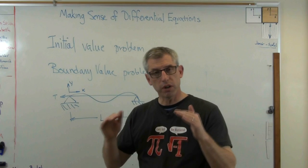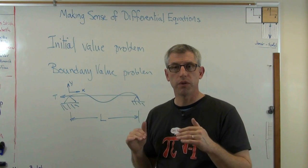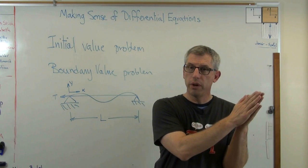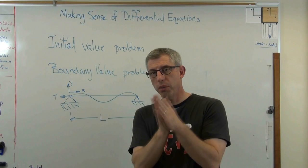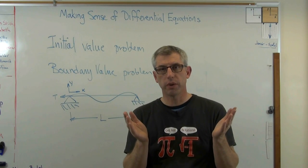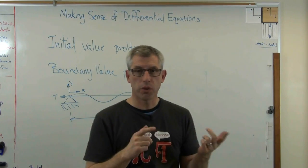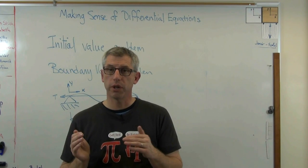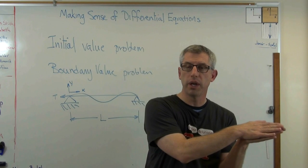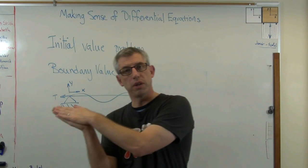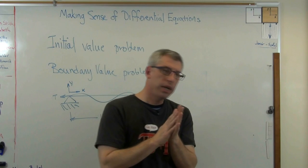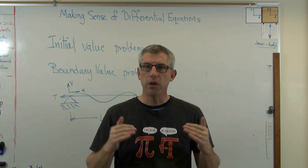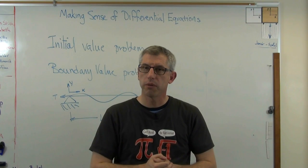We've talked about what differential equations do and the distinctions between them. Just to go over it one more time: is it an ordinary or a partial differential equation? Partial differential equations have more than one independent variable; ordinary differential equations have only one. Is it linear or nonlinear? You have to look at the form of the equation and decide — each has a different set of solution methods. And last: is it an initial value problem or a boundary value problem? Once you can answer those three questions, you've got a real good start to figuring out how to solve it.